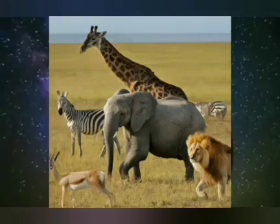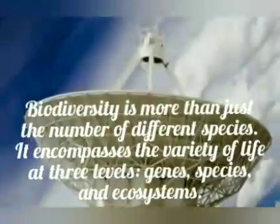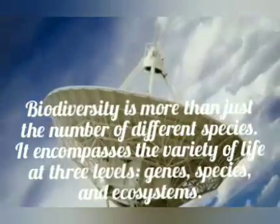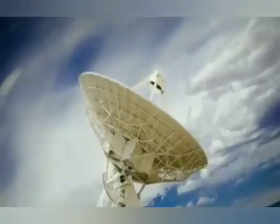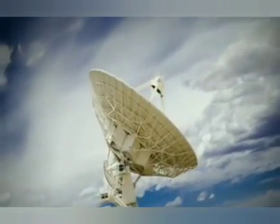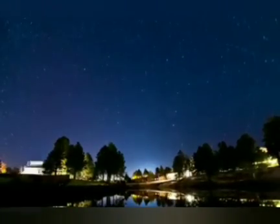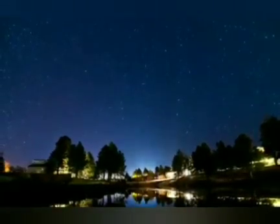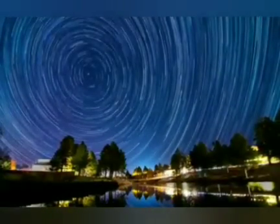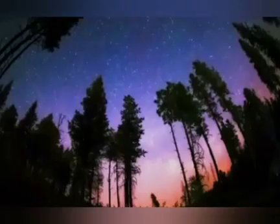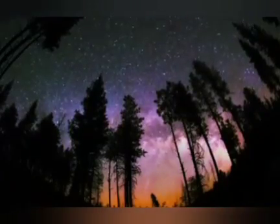The next level of biodiversity is the species level. A species is a group of organisms that can interbreed and produce viable offspring. Each species has its own unique set of characteristics, such as physical appearance, behavior, and ecological niche. The number and variety of species in an area is a key measure of its biodiversity, and areas with a high number of species are considered to be more biodiverse.